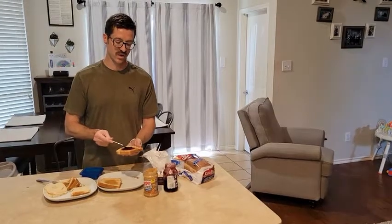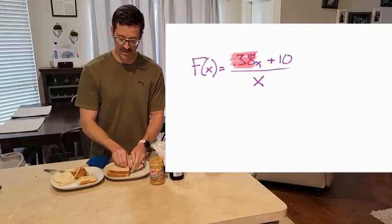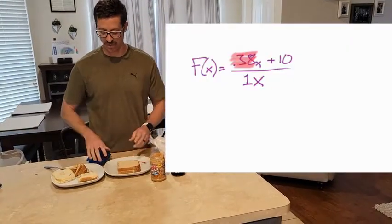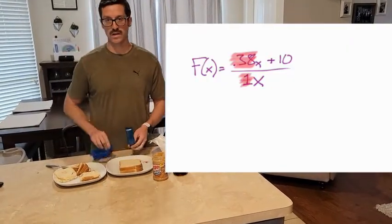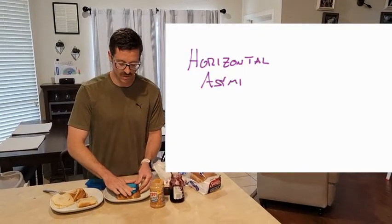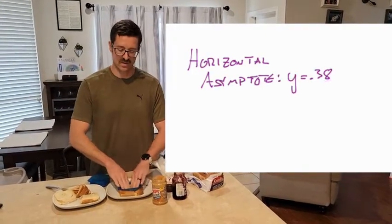In our numerator, the x has a coefficient of 0.38 for the 38 cents. In our denominator, the coefficient is 1. So 0.38 over 1 is 0.38. That means we're going to have a horizontal asymptote at 0.38 or 38 cents.